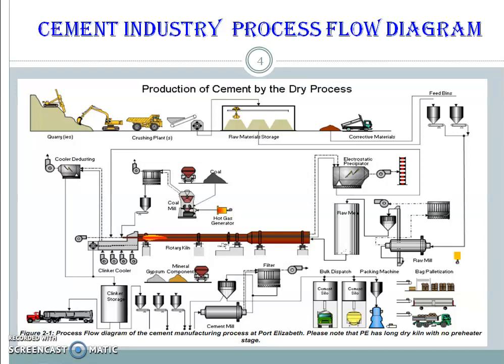Cement industry process flow diagram — dry process: lime is obtained from the quarry, crushed down in the crusher, and stored in raw material storage, then in feed bins where corrective material is mixed in the correct ratio. It is then stored in the raw mill. Coal is processed through the coal mill and used in the rotary kiln. The clinker is formed and stored in clinker storage, then clinker silos, followed by cement mill, cement silos, and finally bulk dispatch and packing.